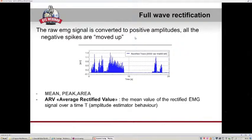Parameters like mean, peak, or maximum value cannot be extracted from the raw signal because, due to its nature, we have equal positive and negative values, so the mean would always be zero. Starting from the rectified signal, the Average Rectified Value (ARV) can be computed as the mean value of the rectified EMG signal over a time period t, and this is sometimes used as an amplitude estimator of the signal.